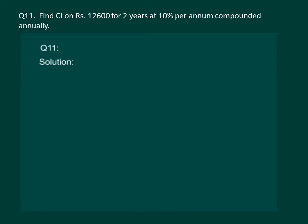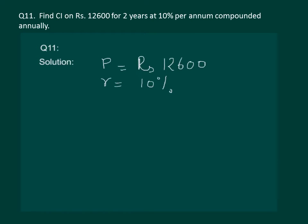Let us start by solving an example. Please read the question on the slide. The question says: find compound interest on rupees 12,600 for two years at 10% per annum compounded annually. In the question, we are given principal equal to rupees 12,600, rate of interest is 10%, and time is two years.